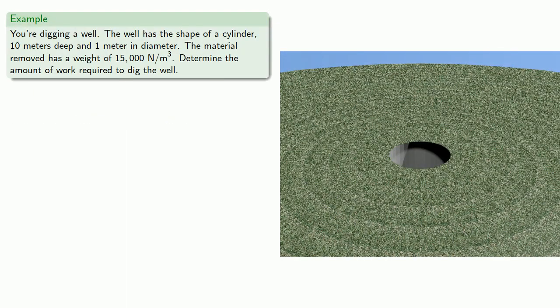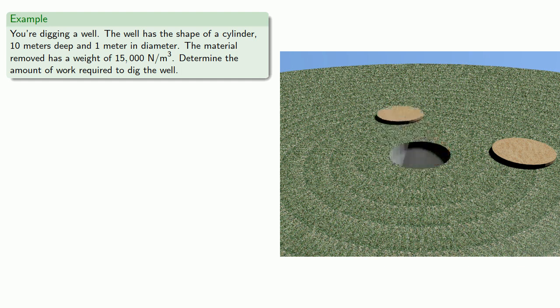For example, suppose you're digging a well. The well has the shape of a cylinder 10 meters deep and 1 meter in diameter. The material removed has a weight of 15,000 newtons per cubic meter. So let's determine the amount of work required to dig the well.